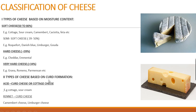Classification based on curd formation distinguishes between acid curd cheese and rennet curd cheese. Acid curd cheese is formed by bacterial acidification — cottage cheese is an example. Rennet curd cheese involves the enzyme rennet in curdling the milk; examples are Camembert and Limburger cheese.